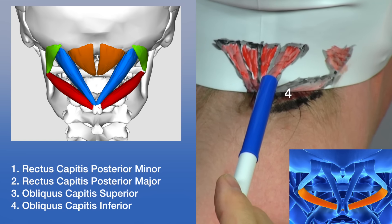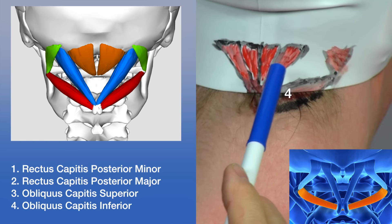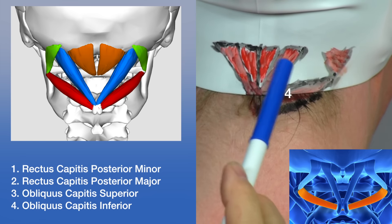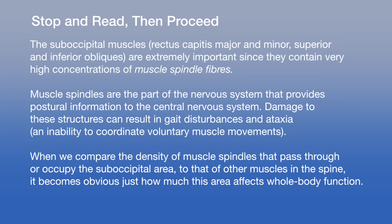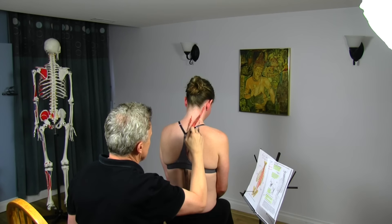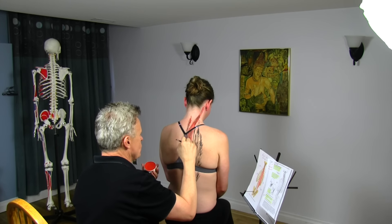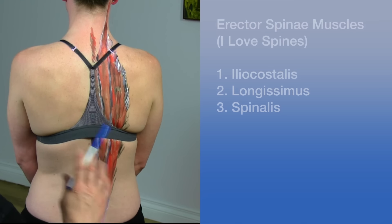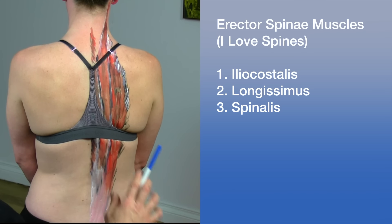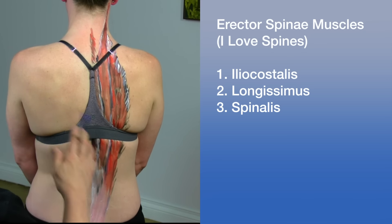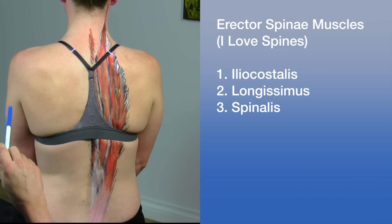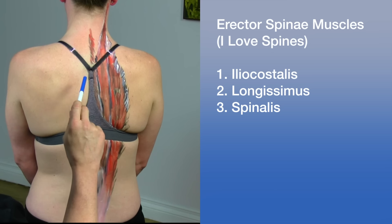Moving to the side, we have two obliquus capitis muscles — a superior and an inferior. The obliquus capitis superior originates from the transverse process of C1 and inserts on the occiput, lateral to the rectus capitis posterior major, just posterior to the mastoid process on the side here.